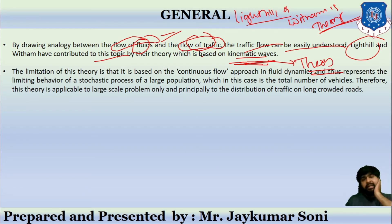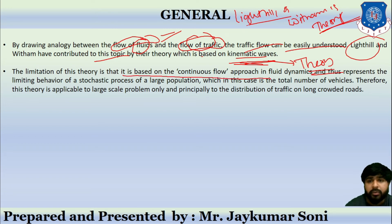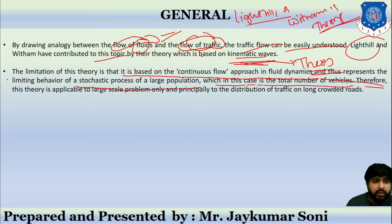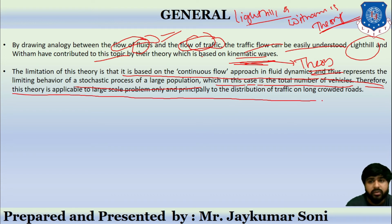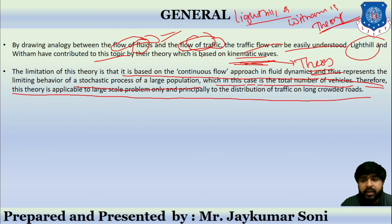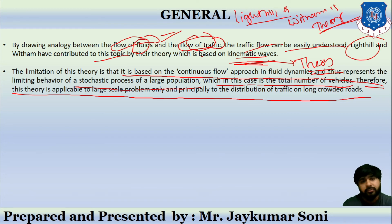Like all theories, this one has limitations. It is based on a continuous flow approach in fluid dynamics, and thus represents the limiting behavior of a stochastic process of a large population — in this case, the total number of vehicles. Therefore, this theory is applicable only to large-scale problems, principally the distribution of traffic on long, crowded roads.